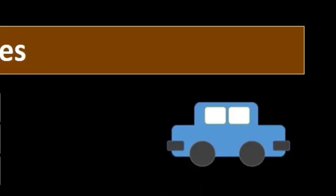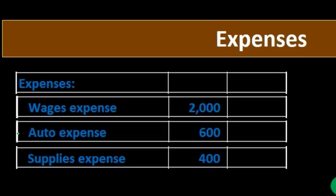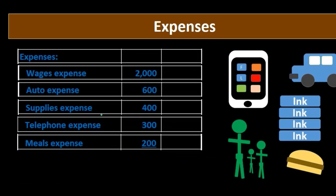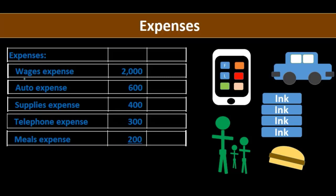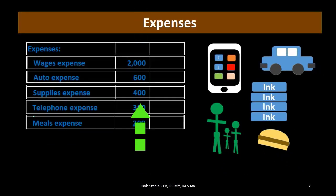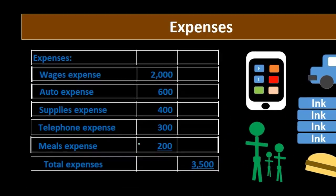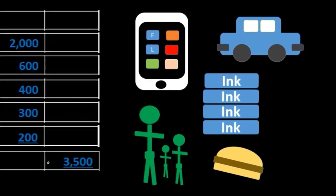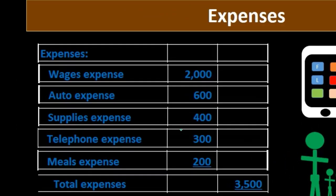The inner and outer columns do not represent debits and credits; they represent subcategories that will be summed up in the outer column. We list wages expense, auto expense, supplies expense, telephone expense, and meals and entertainment — underlining the last one. We then sum that subcategory: $2,000 plus $600 plus $400 plus $300 plus $200 equals $3,500. Total expenses of $3,500 goes in the outer column.